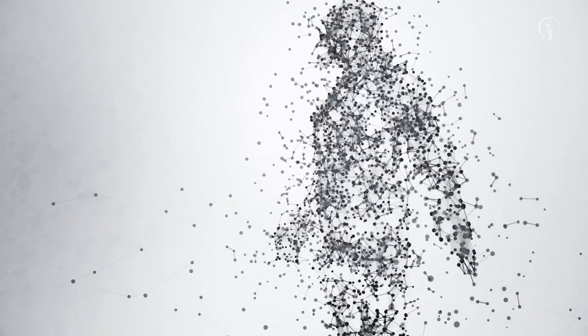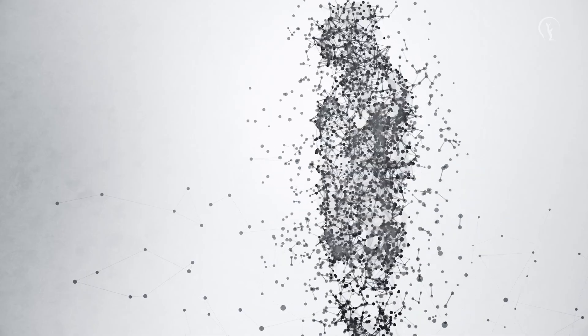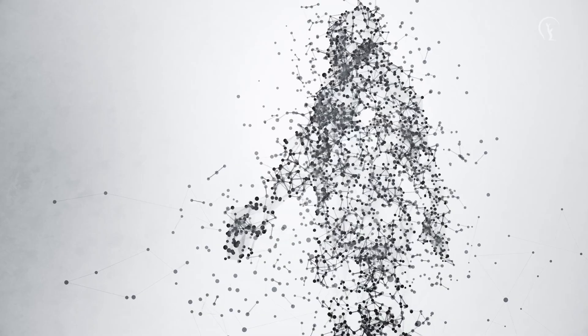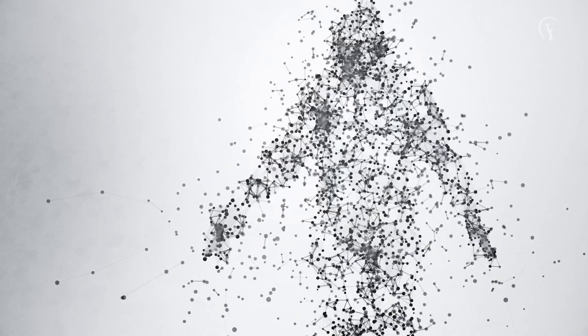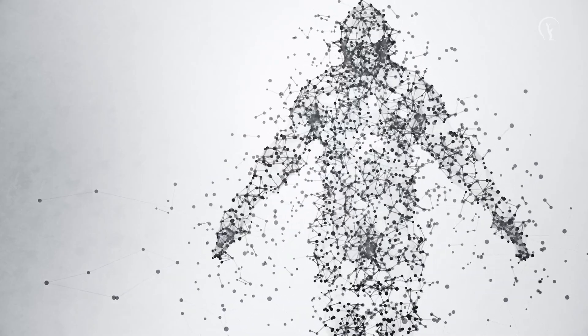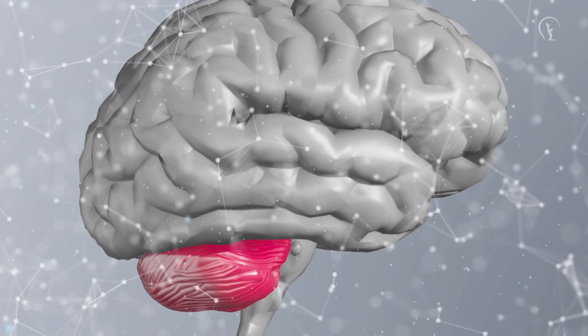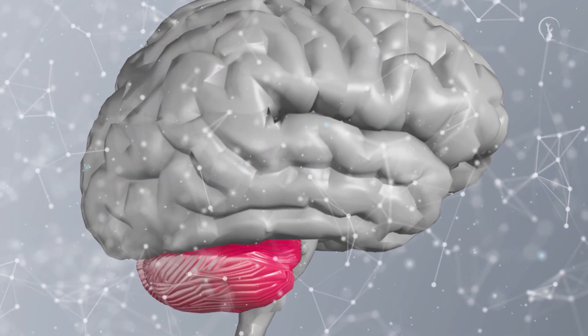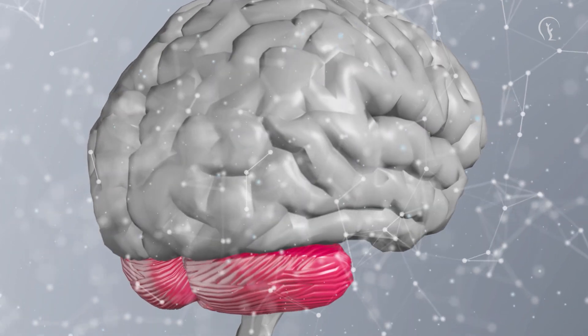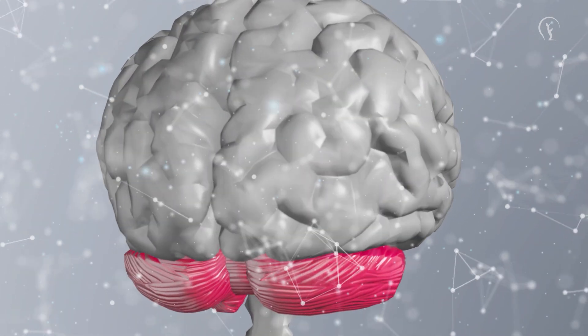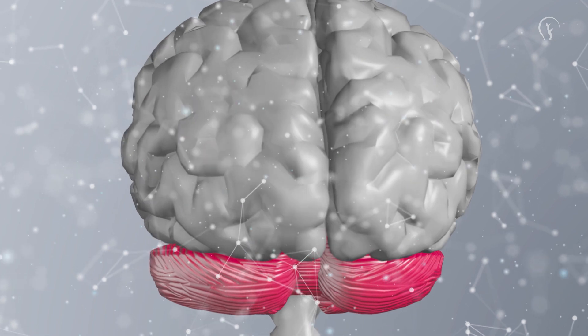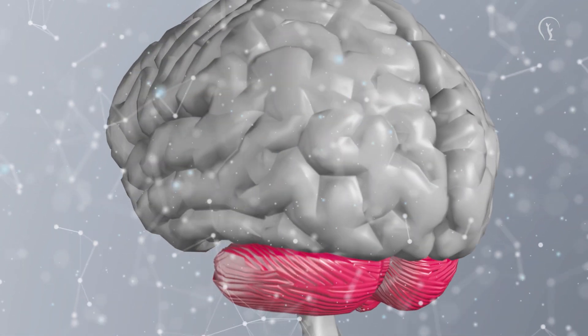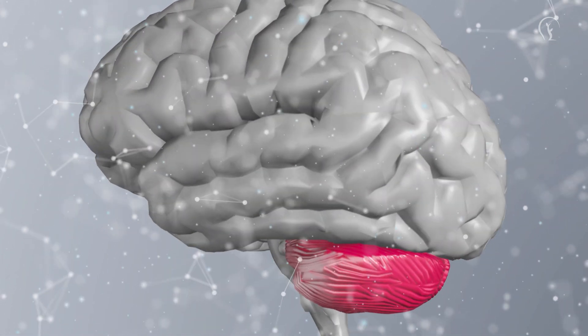Despite growing evidence, human magnetoreception remains an open question. Unlike birds, turtles, or insects, we don't display obvious magnetic behaviors, making it difficult to study. However, recent experiments suggest that our brains may respond to shifts in magnetic fields, even if we are not consciously aware of it. As research tools become more sophisticated, we may discover that this hidden sense is more significant than previously thought.